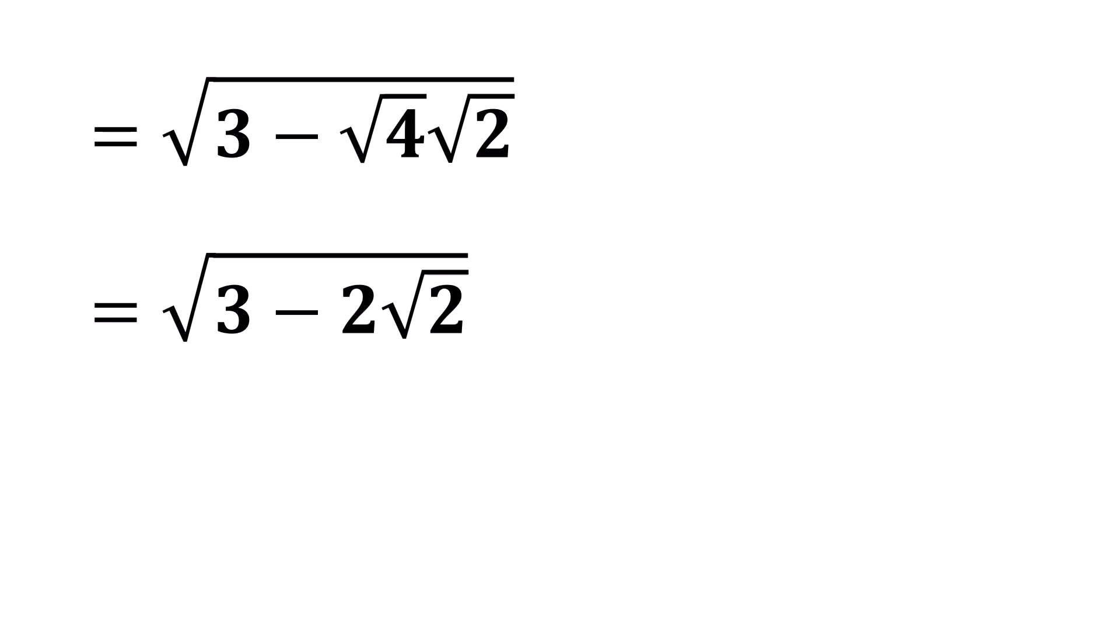Now, let's break the 3 into 2 plus 1. So, we can rewrite the full expression as the square root of 2 plus 1 minus 2 times the square root of 2.